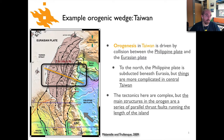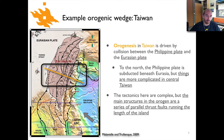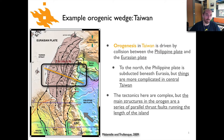If we want to look at a natural example, one of the better places to go is the island of Taiwan. In this case we're looking at the Philippine Sea plate coming in to the northwest and colliding with the Eurasian plate. The island of Taiwan is outlined here. We have a complex subduction setting but the main thing is that on the island of Taiwan you see a series of thrust faults running parallel to one another along the length of the island.